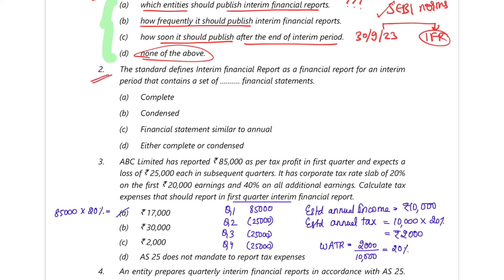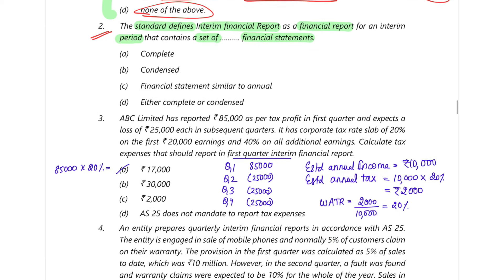Question two: the standard defines an interim financial report as a financial report for an interim period containing a set of what kind of financial statements? As covered in the concept video, it can be either complete or condensed. So option D is the answer.